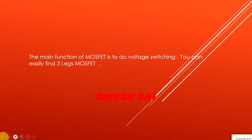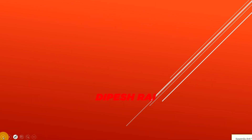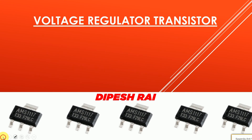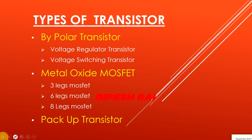Today we discussed many types of transistors: the bipolar transistor including the voltage regulator transistor and voltage switching transistor, the 3-leg MOSFET, 6-leg MOSFET, 8-leg MOSFET, and the backup transistor. If you still have any confusion, let me know in the comment section. If you got some knowledge from this video, please share it. I'll be back with another new video — goodbye, see you again.